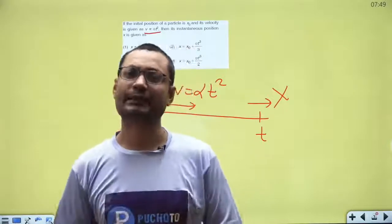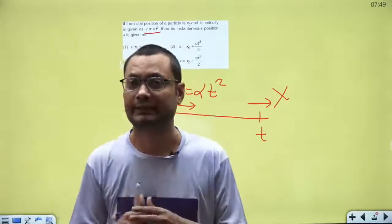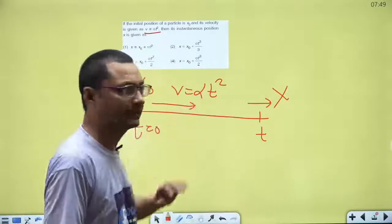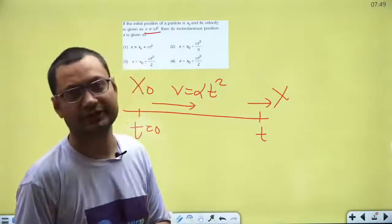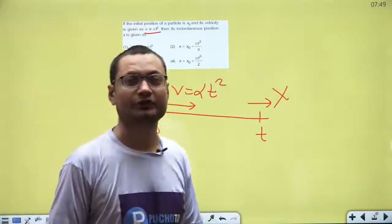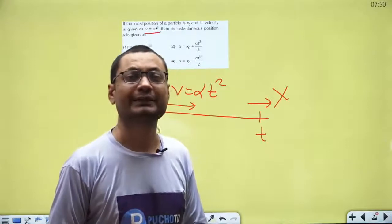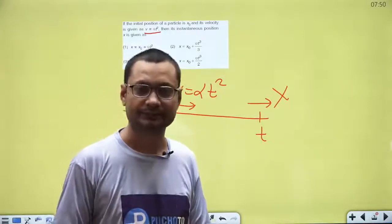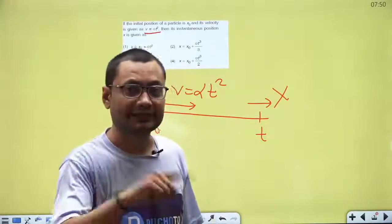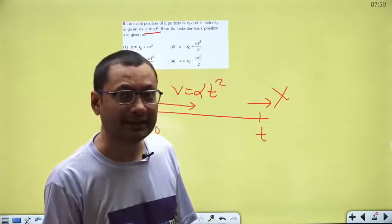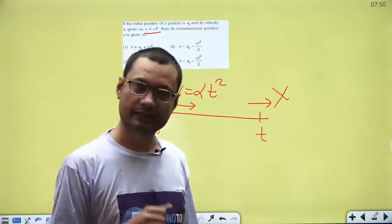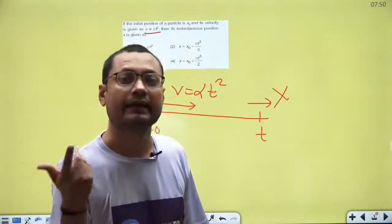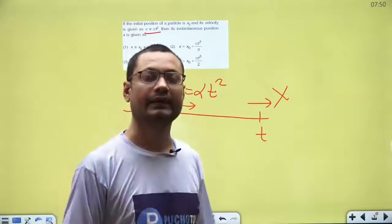यह आपका basic है। अभी मेरे को क्या चाहिए — velocity दे रखी αt² है, चाहिए क्या? Position चाहिए। तो velocity से position and displacement कैसे निकालेंगे? Integrate करके। Position से velocity चाहिए होती तो differentiate करते। Velocity से position चाहिए तो integrate करोगे।